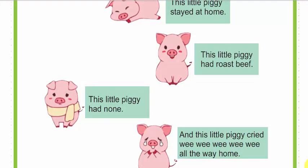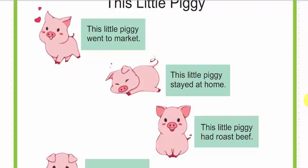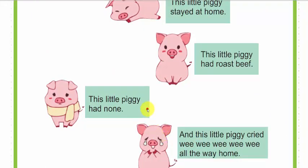This little piggy had none. And this little piggy cried wee, wee, wee, wee, wee all the way home. One more time. This little piggy went to market. This little piggy stayed at home. This little piggy had roast beef. This little piggy had none. And this little piggy cried wee, wee, wee, wee, wee all the way home.